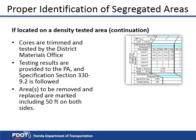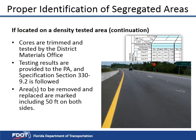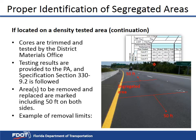Areas to be removed and replaced are marked including 50 feet on both sides. The limits of the segregated areas are marked, then the removal limits are marked 50 feet beyond the segregated area limits. These new limits will identify the area to be removed and replaced.